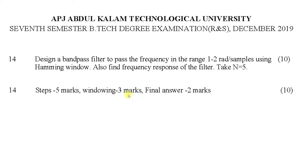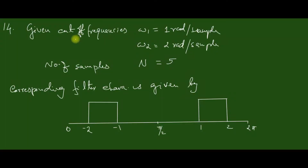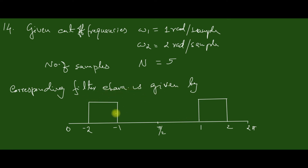Let us try to solve this problem. Given cutoff frequencies: omega 1 equal to 1 radian per sample and omega 2 equal to 2 radians per sample. The number of samples N equals 5, and the corresponding filter characteristics is given by this graph.